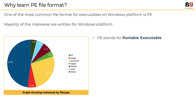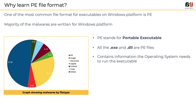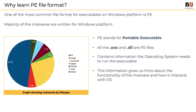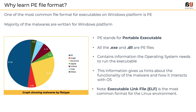PE stands for Portable Executable. All .exe and .dll files are PE files. The PE file contains the information required for the operating system to run the executable. During malware analysis, this information gives us hints about the functionality of the malware and how it interacts with the operating system. If you are interested in knowing the most common format for Linux distributions, it is ELF — Executable and Linkable Format.